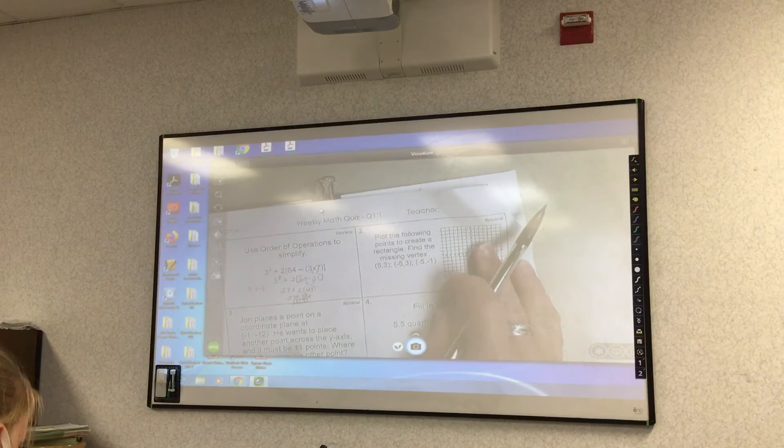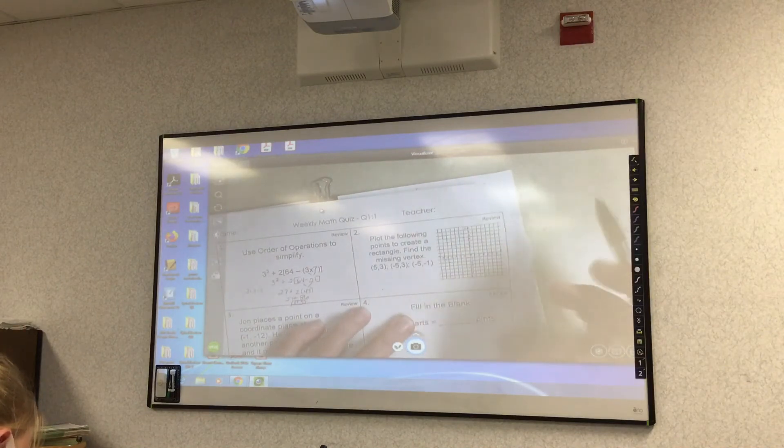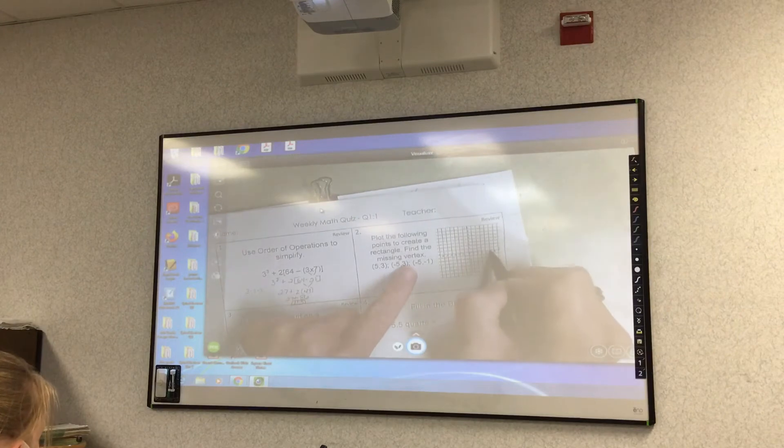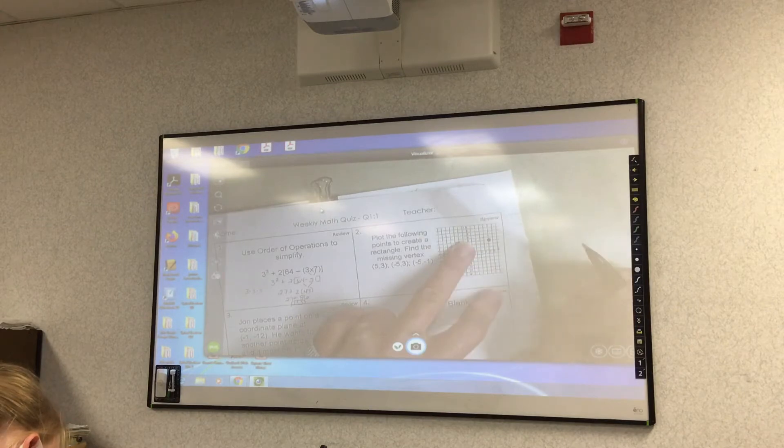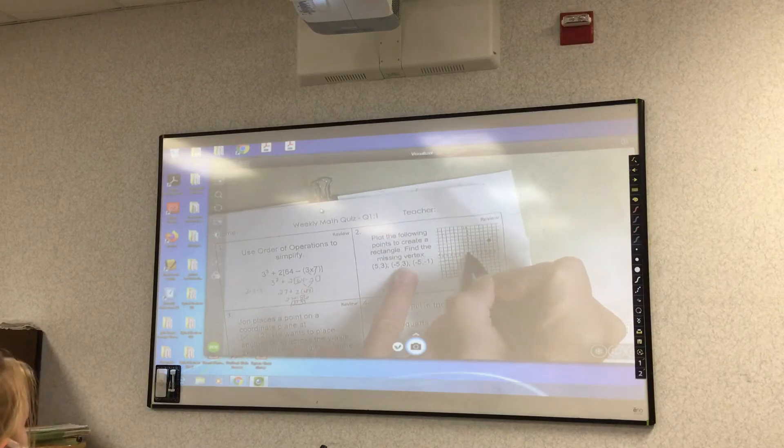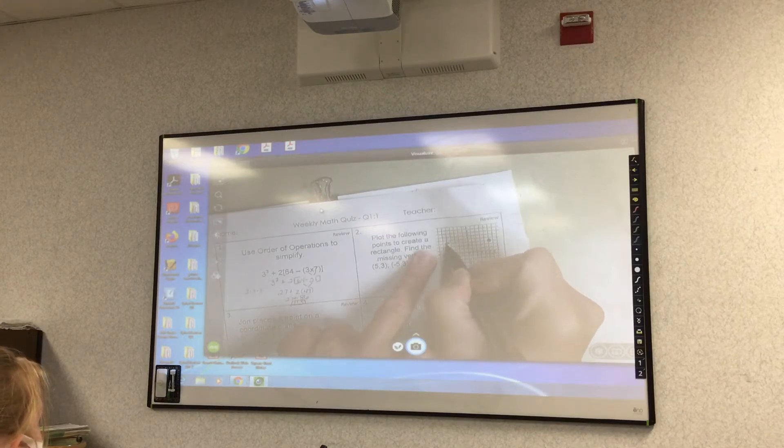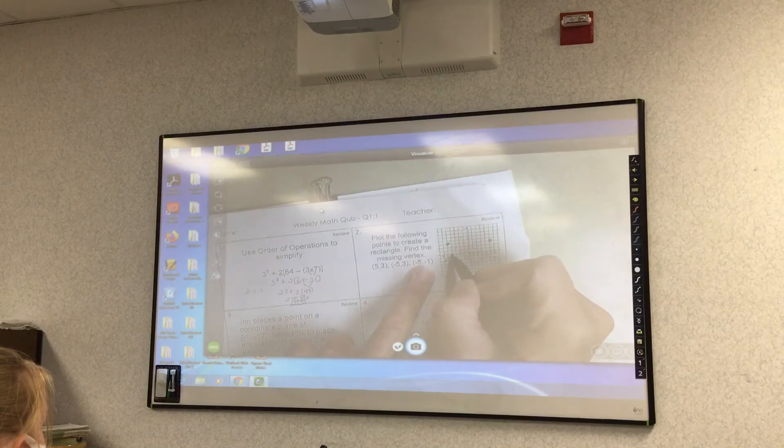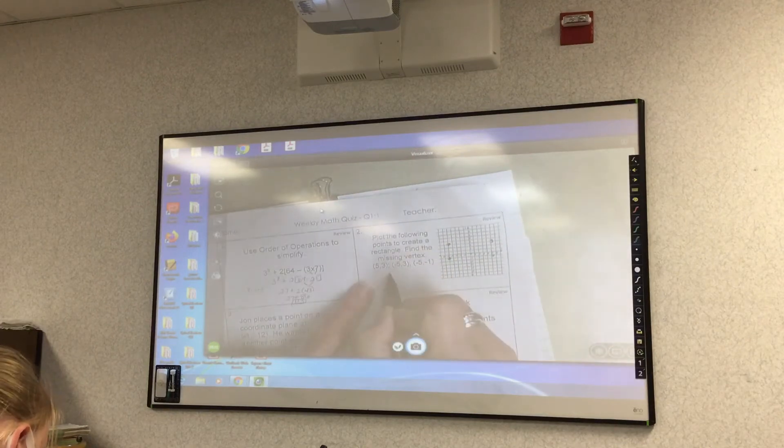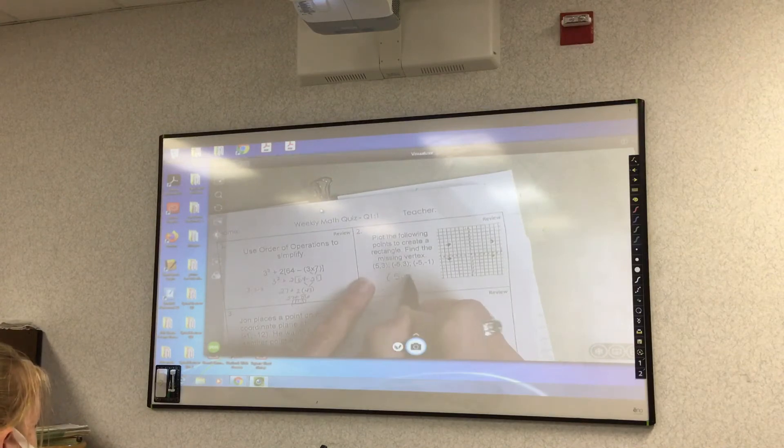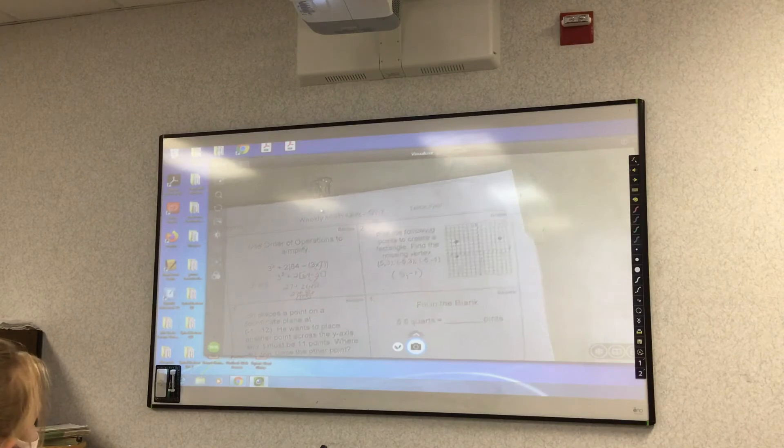Number two, I'm just going to use this graph. Plot the following points to create a rectangle. Find the missing vertex. Over four, up three. One, two, three. Make it dark so I can see it when you guys take the picture of those. Negative five, positive three. Go back to negative five, left to negative five, up to three. One, two, three. Negative five, negative one. So then my other number will be positive five, negative one. Write the coordinates also. I also want you to write the coordinates on there.